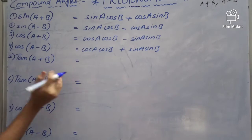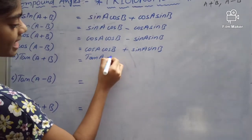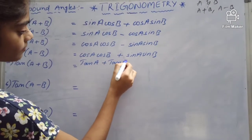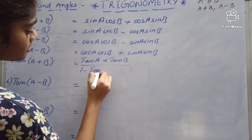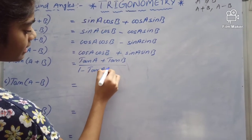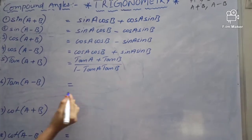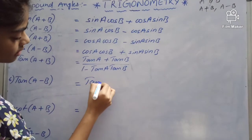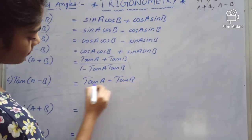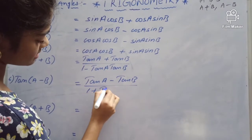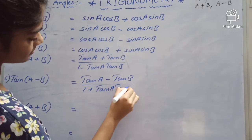Tan of A plus B equals tan A plus tan B divided by 1 minus tan A tan B. Tan of A minus B equals tan A minus tan B divided by 1 plus tan A tan B.